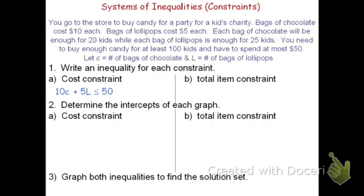For the items constraint, going through the problem this time, I see that each bag of chocolate can feed a certain number of kids. It says that each bag of chocolate can feed 20 children, while each bag of lollipops will feed 25 children. The other number in here that does not deal with money would be that we need to buy enough candy to feed at least 100 kids. These three numbers will set up my item constraint.